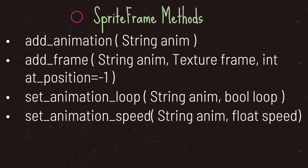When you want to create a SpriteFrames resource, you first need to create an animation name using the add_animation method. The name you provide is what will be used inside your AnimatedSprite class. Once you've added an animation, you can start adding frames to that specific animation through the add_frame method.